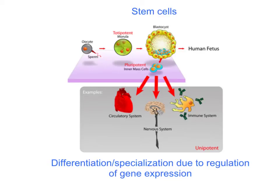Our undifferentiated or unspecialized cells are called stem cells. Stem cells really have the ability to turn into any kind of cell they want to turn into. For example, what we have here are pluripotent cells — they could turn into heart cells, nervous cells, or immune system cells.